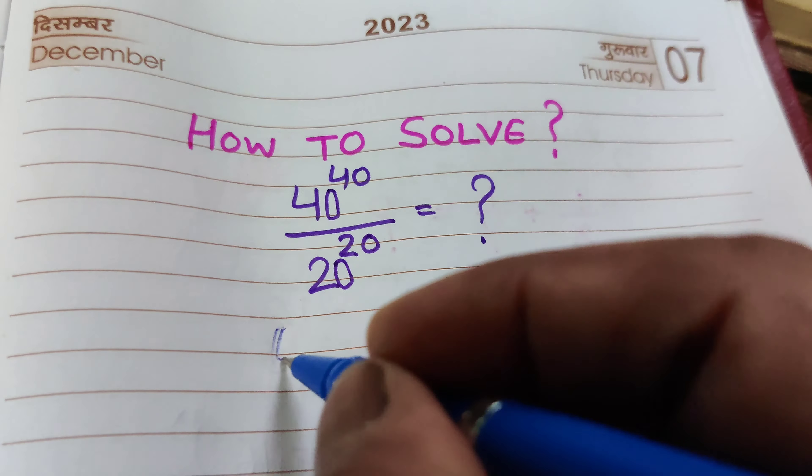So now 40 raised to the power of 40 — we can write this as 2 into 20, raised to the power of 40. We can use the formula (AB) raised to the power of M equals A raised to the power of M into B raised to the power of M.